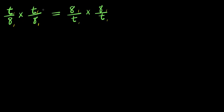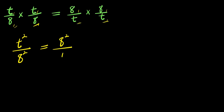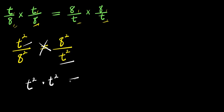Let's multiply the numerator on the left-hand side: t times t is t to the power of 2, divided by 8 times 8, that is 8 to the power of 2. And this equals 8 times 8 again — that is 8 to the power of 2 — divided by t times t, that is t to the power of 2.